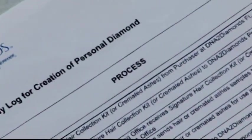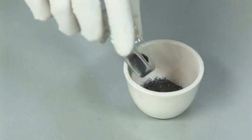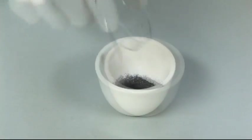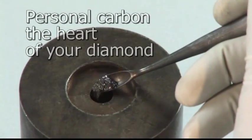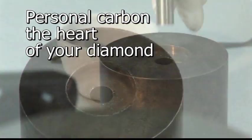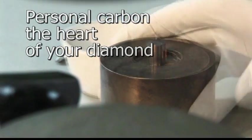Along the way, a quality control log carefully follows the making of your diamond. Your personal carbon is supplemented with natural carbon in order to ensure a sufficient amount for the creation process, which is used as the heart of your diamond creation.